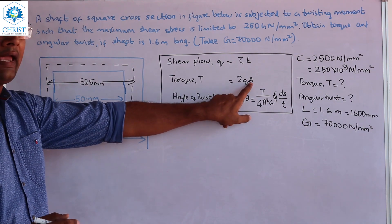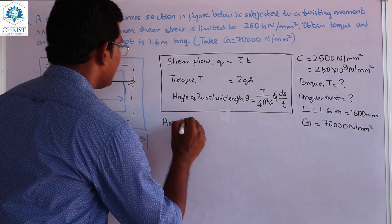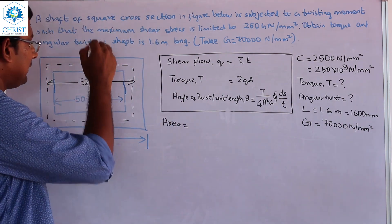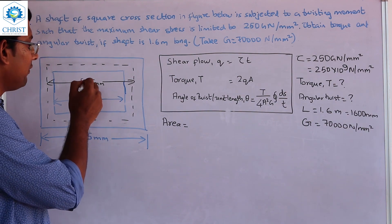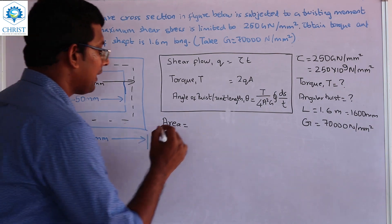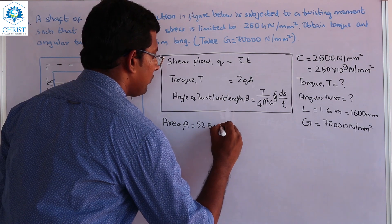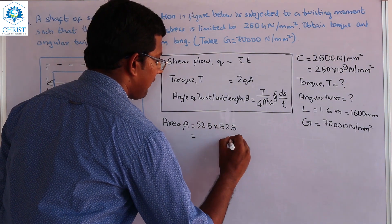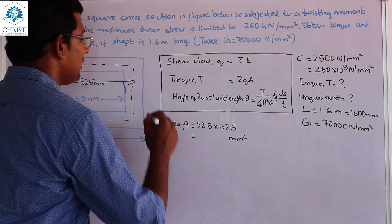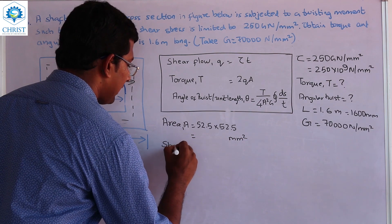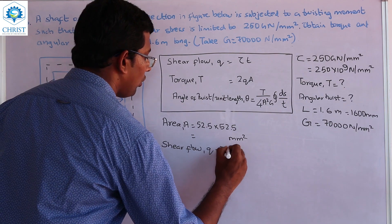First, find the area. This is a square section, so the center-to-center length is 52.5mm. Therefore, area A equals 52.5 × 52.5 mm squared.